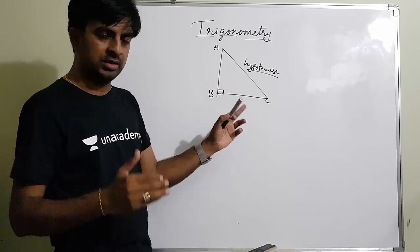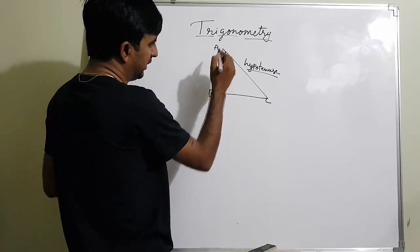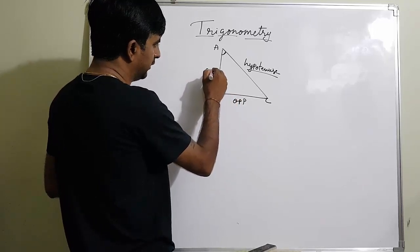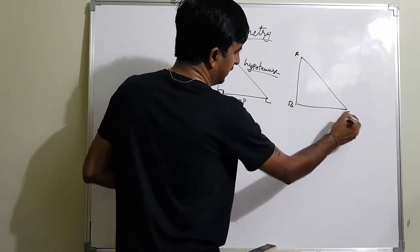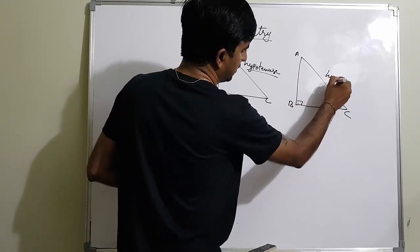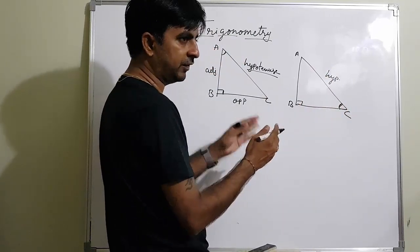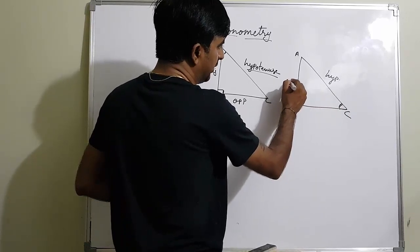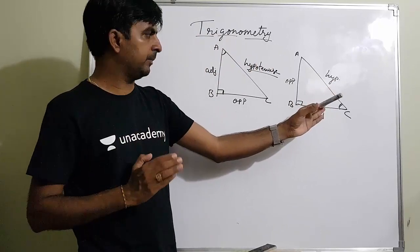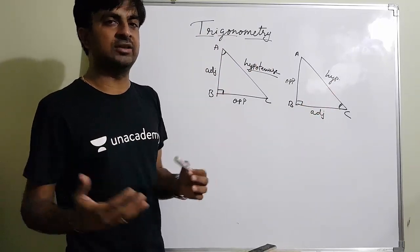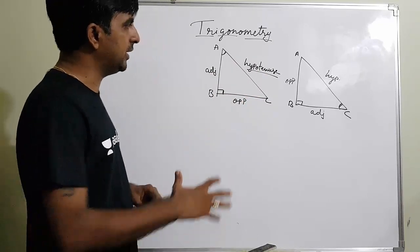The other two sides, on the basis of the selected angle, can be called opposite and adjacent. If I select a particular angle, the side across from it is the opposite side and the side next to it is the adjacent side. In triangle ABC with a right angle at B, the hypotenuse remains fixed, but the opposite and adjacent sides change depending on which angle we are working with.